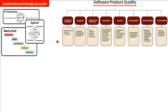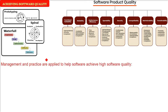How to achieve software quality? There are certain ways, certain facts and methods, because all these attributes can only be achieved by a proper plan and organized thoughts. Management and practice are applied to help software achieve high quality.